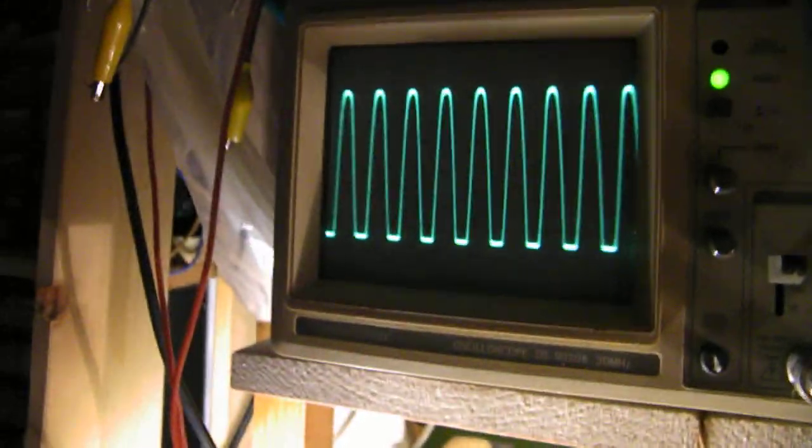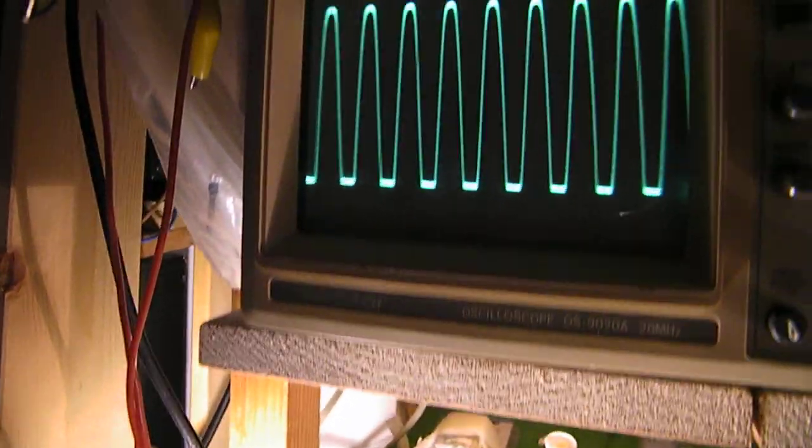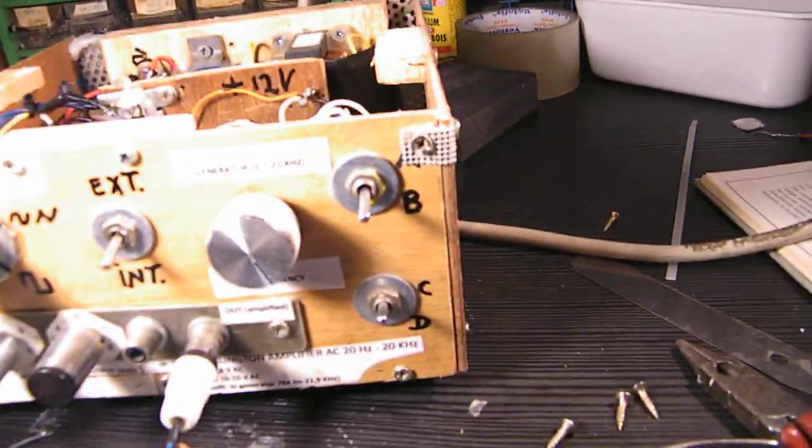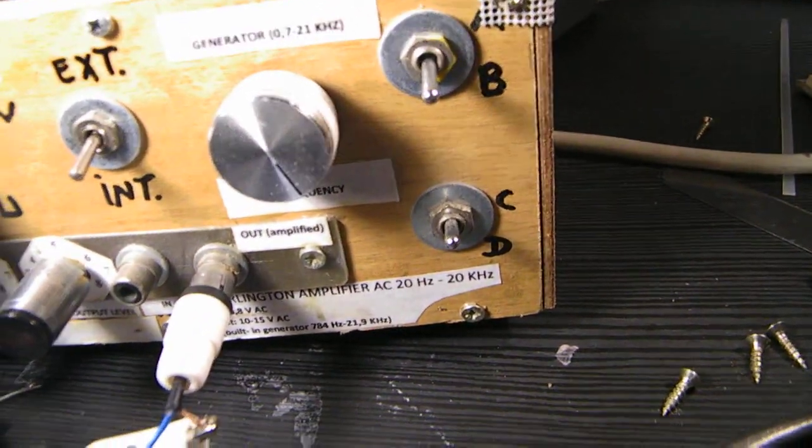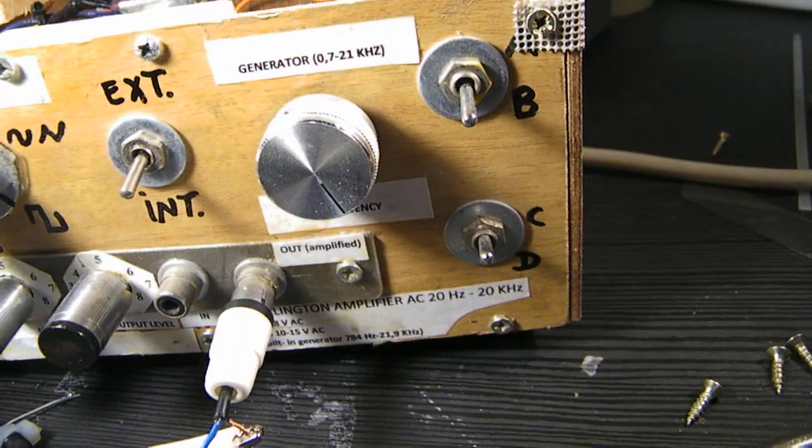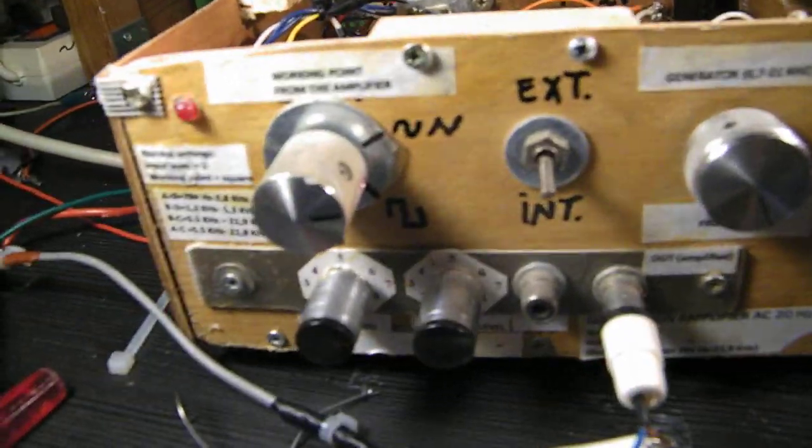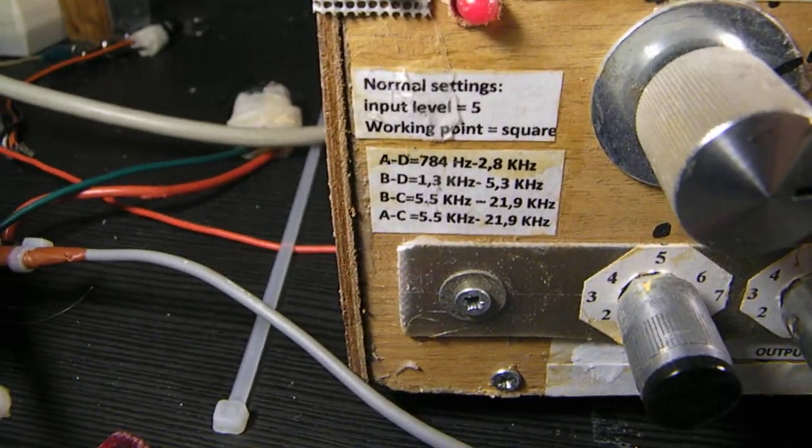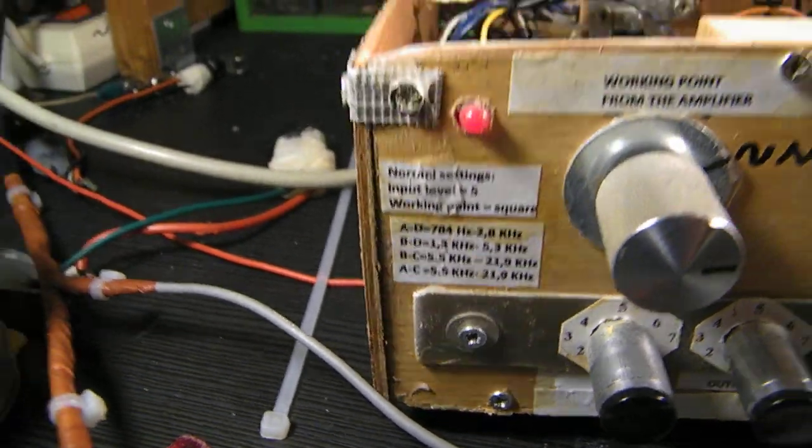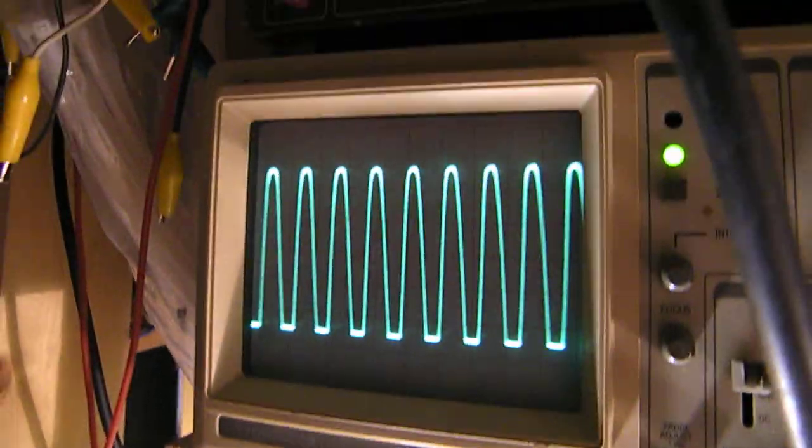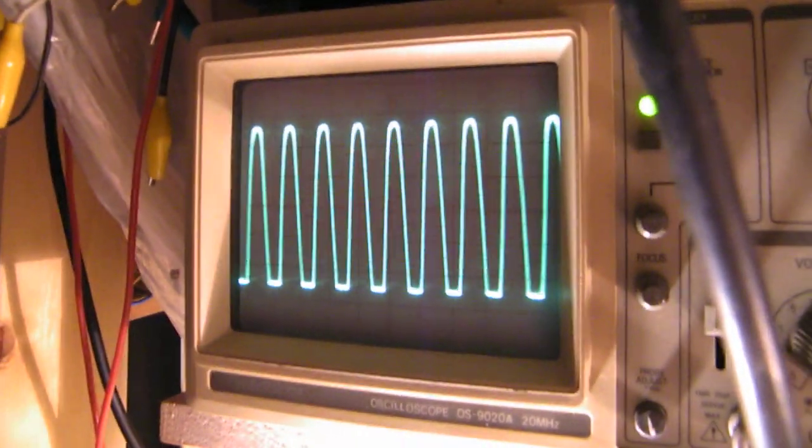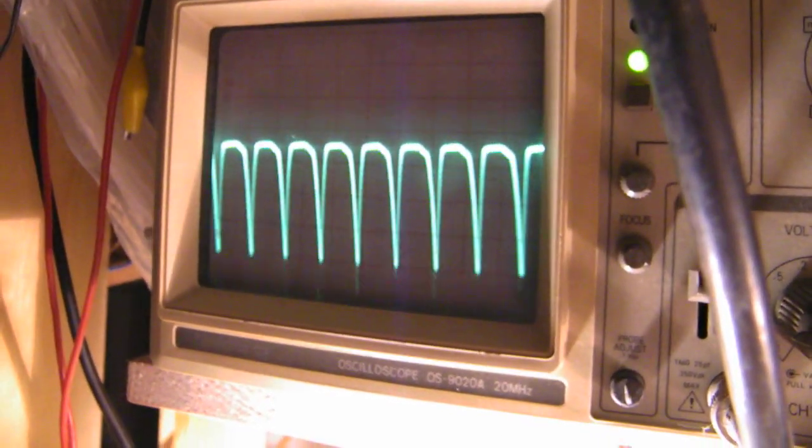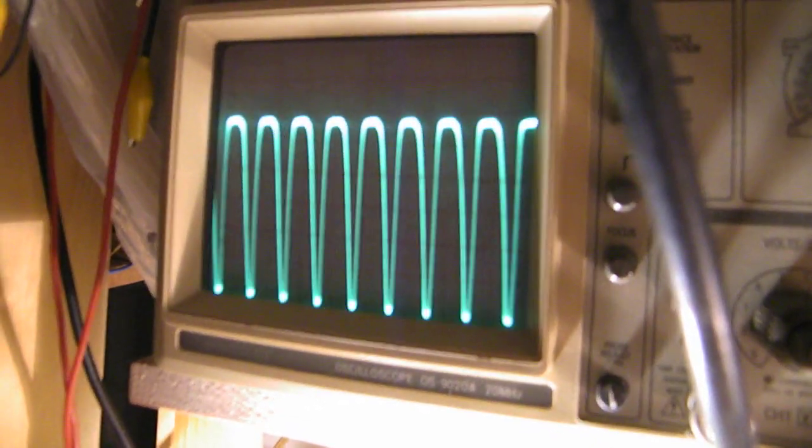This is my scope at the moment. And I'm going to change the working point now. I've made a connection between B and C. That means that we are going to listen and look from, in this frequency, 5.5 up to 21 kilohertz. I changed the working point now. I have not connected my counter, but anyway, working point is changed. And this is what happens.